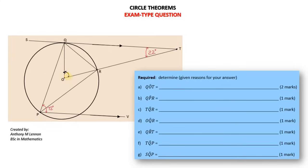Angle QOT is part of a triangle — triangle QOT — and we have 22 degrees as given. We want to find this one, but do we know the third angle? If we know that third angle, we can find this one because we would have two angles known in order to find the remaining one.